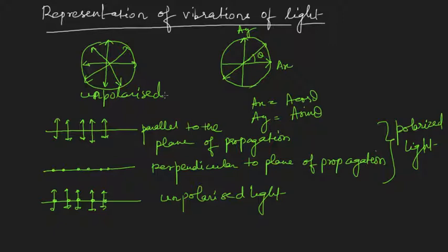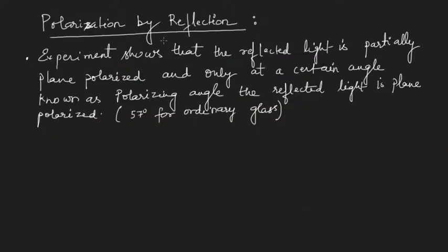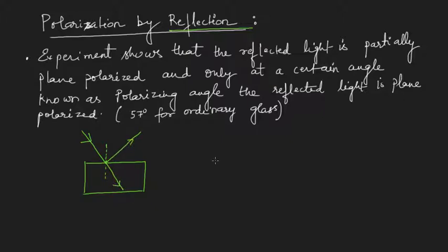The next question is: how can we polarize light? There are numerous ways to polarize light. The simplest method is by reflection. What we do is shine unpolarized light on a glass plate. I will represent parallel vibrations with lines and perpendicular vibrations with dots. When the light is incident on a glass plate, it will reflect and refract. We are considering unpolarized light, so it has vibrations both parallel and perpendicular to the plane of incidence.